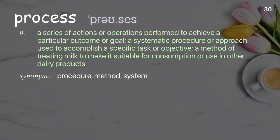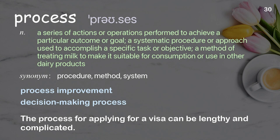Process: a series of actions or operations performed to achieve a particular outcome or goal; a systematic procedure or approach used to accomplish a specific task or objective. Examples: process improvement, decision-making process. The process for applying for a visa can be lengthy and complicated.